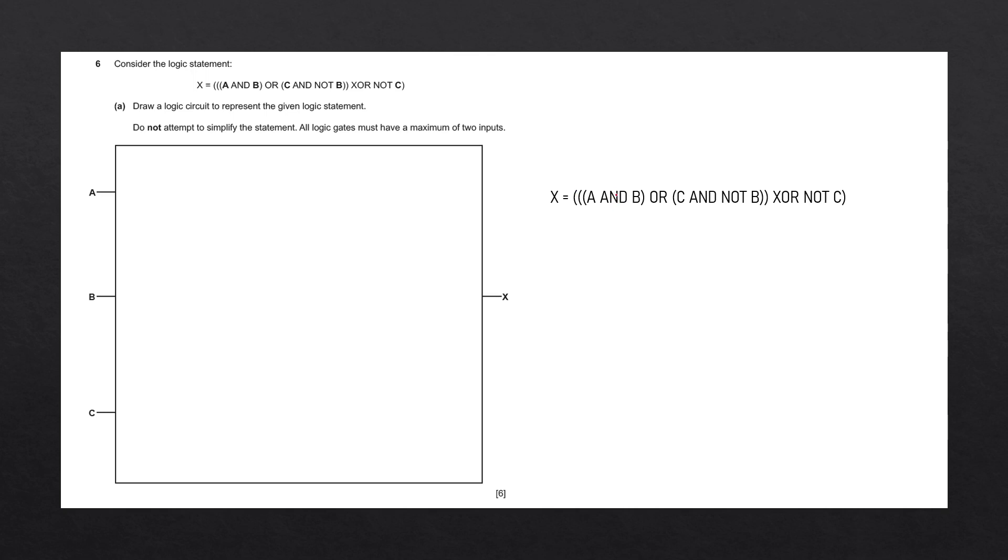Starting off with our AND gates, this has three total brackets. This OR gate only has two brackets. The AND and the NOT both have three, and the XOR and the NOT only have one. So we've got three options: this AND gate, this AND gate, and this NOT gate.